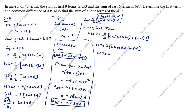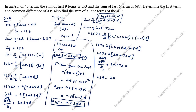So 687 = 3 × (2a + 73d), which gives 229 = 2a + 73d. This is the second equation.